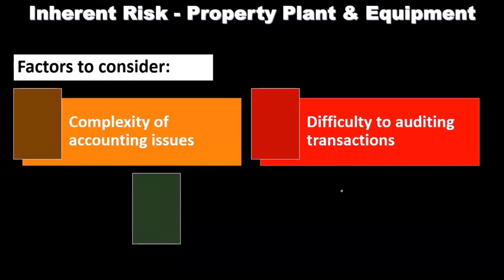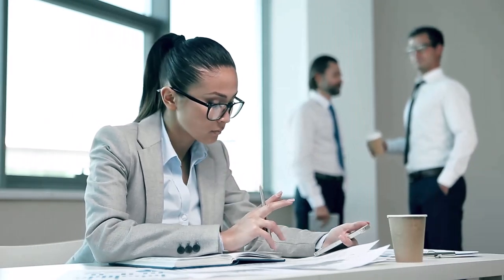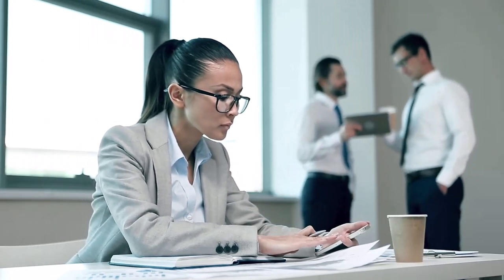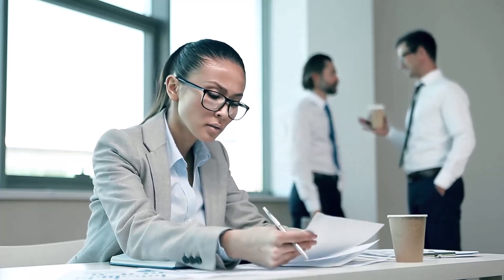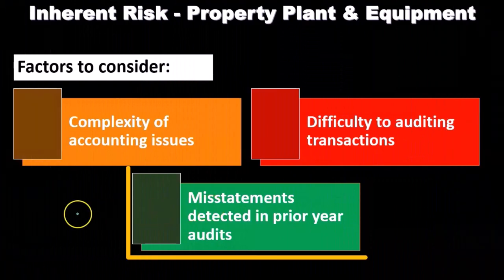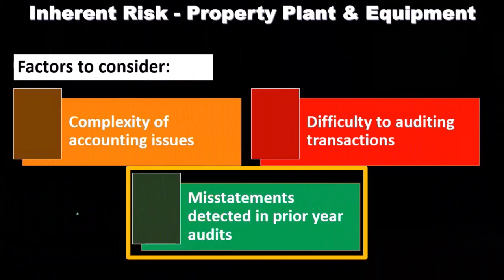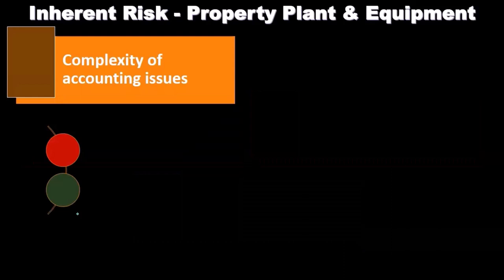We need to consider whether documentation is available, whether we can observe the actual equipment and location, and whether misstatements were detected in prior years. If there were misstatements in the prior year regarding inherent risk for property, plant, and equipment, then we're going to increase the inherent risk in the current year.